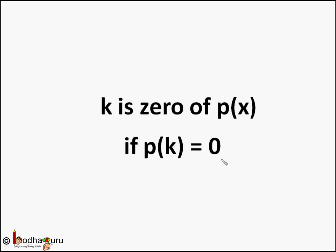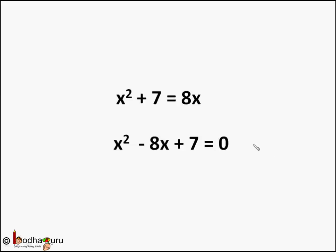Why should we find the zero of a polynomial? Look at this equation: x² + 7 = 8x. We can also write this as x² - 8x + 7 = 0, taking 8x to the left hand side.